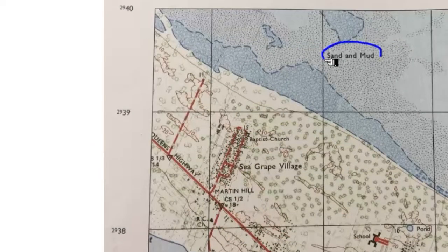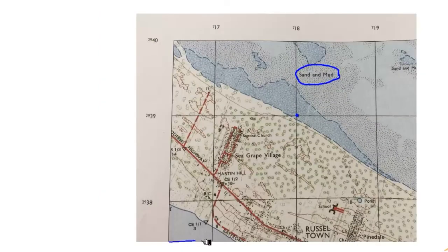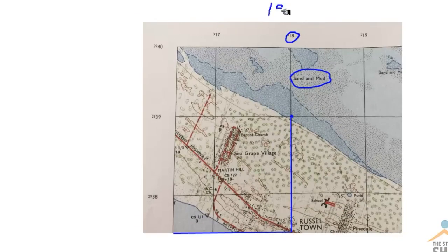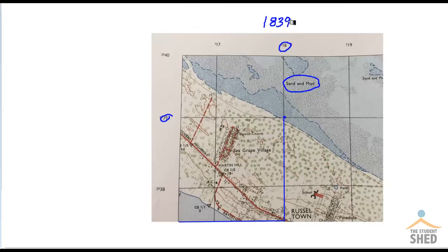Let's look at one more example. Let's find the four-figure grid reference for this area of sand and mud. The first thing we must do is mark off the lower left-hand corner of the square where the sand and mud is, then go along the corridor until the line touches the point we marked off, and then go up the stairs. Along the corridor we ended up at 18 — that's our first two digits — and up the stairs we ended up at 39. So the four-figure grid reference for the sand and mud is 1839, and that's it.